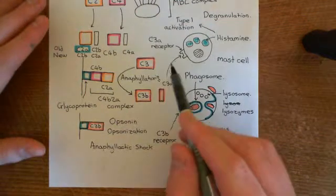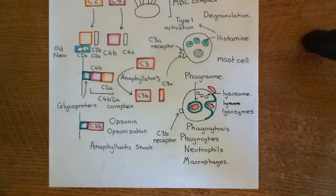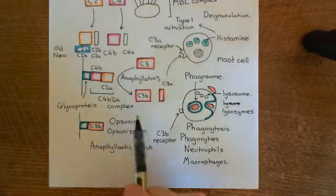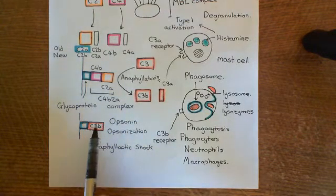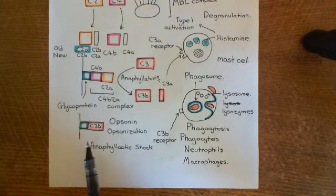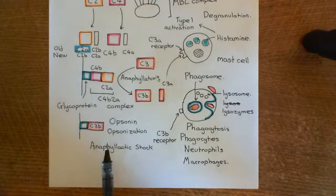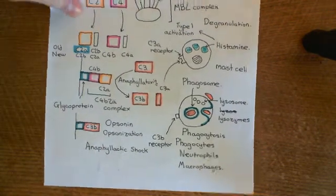C3A activates the C3A receptor on the mast cells and causes mast cell degranulation. Now let's look at the final role of C3B, because C3B — we've already seen that it's involved in opsonization of the microbe — but it's actually also got another role. Basically, C3B combines with another complement protein, C5, and for this I'm going to go onto another piece of paper.